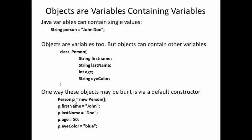I can construct a class called Person, note the capital P, that has four variables associated with it: firstName, lastName, age, and eyeColor. One way we can construct such an object is via the default constructor.